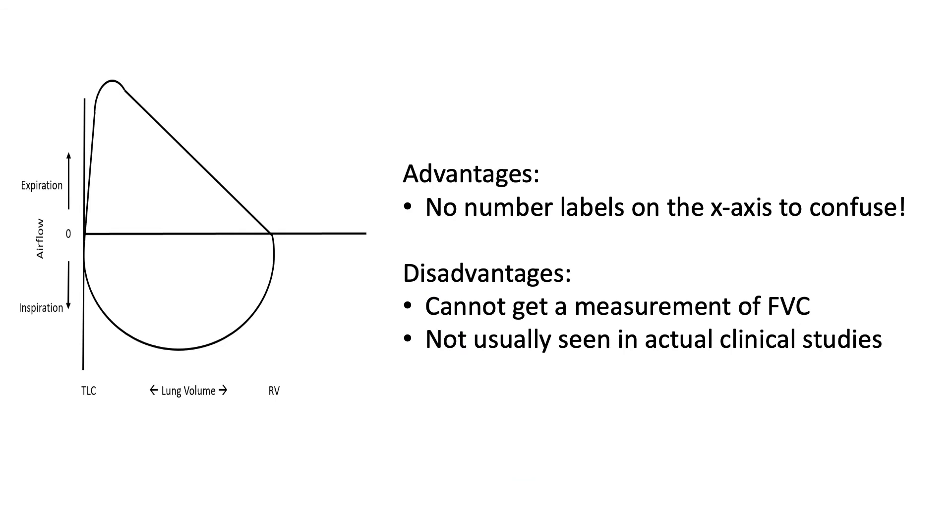So let's go in reverse order and first start with the easiest one, where there's just no labels on the x-axis. The advantage of this format is that there's no labels on the x-axis, so there's nothing there to confuse us. But the disadvantage is clearly that you cannot get a measurement of the vital capacity or forced vital capacity that you would normally get from a flow volume loop. This is not usually seen in actual clinical studies. This would probably be more a theoretical representation of the flow volume loop.